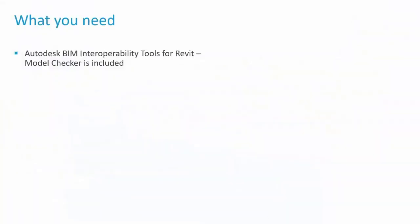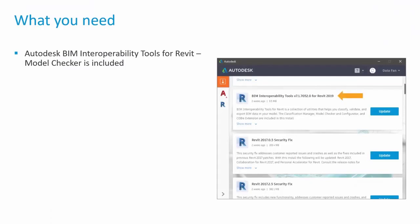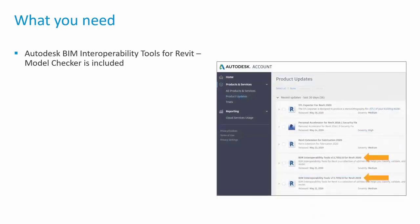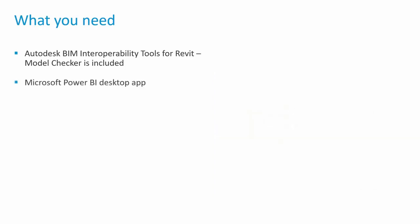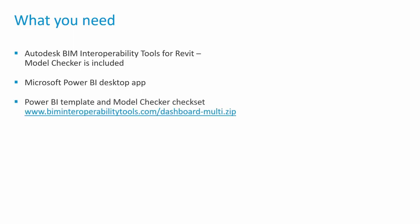To get this done, you'll need the Autodesk BIM Interoperability Tools for Revit, where Model Checker is included — available through the Autodesk Desktop App or your Autodesk account manage page. You'll also need the Microsoft Power BI Desktop app; if you don't have access, contact your IT team. You'll need the Power BI template and Model Checker check set. The Power BI template is in the zip file — there's 'dashboard.zip' for the single project template and 'dashboard-multi.zip' for multiple projects, with links in the video description.